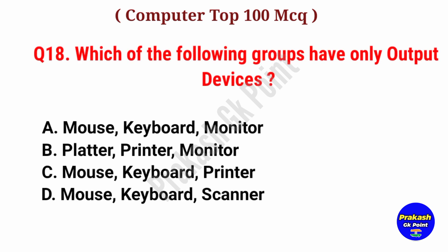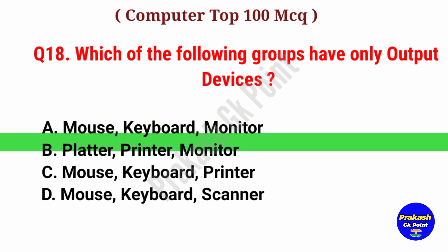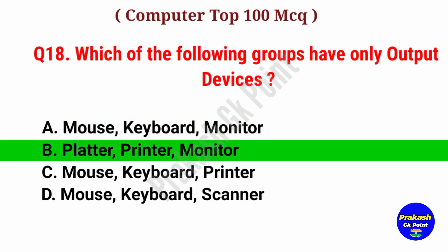Which of the following groups have only output devices? Answer: Option B, Plotter, Printer and Monitor.